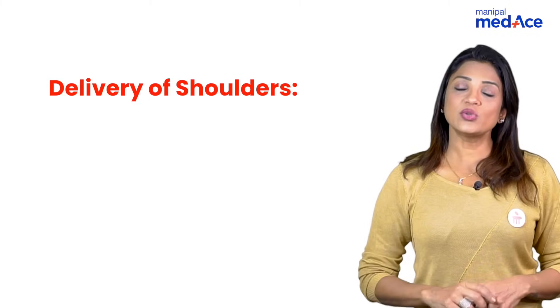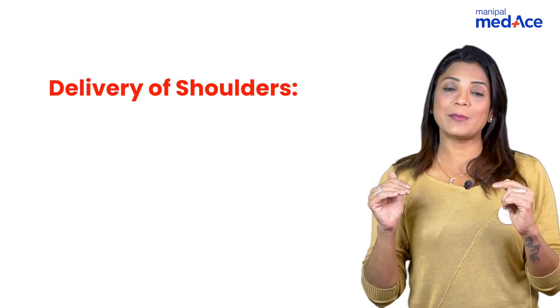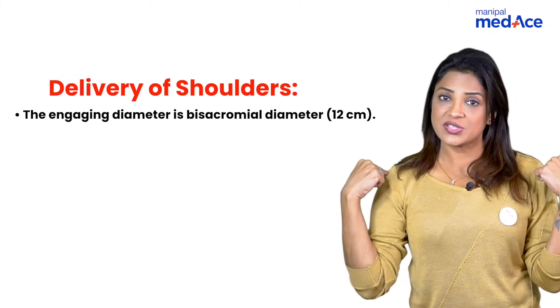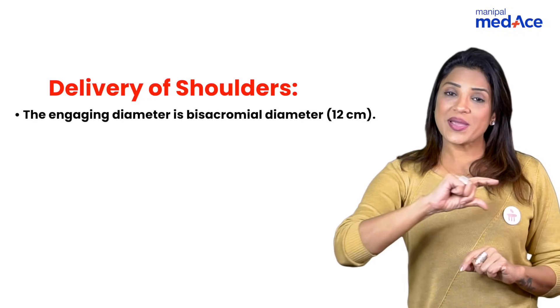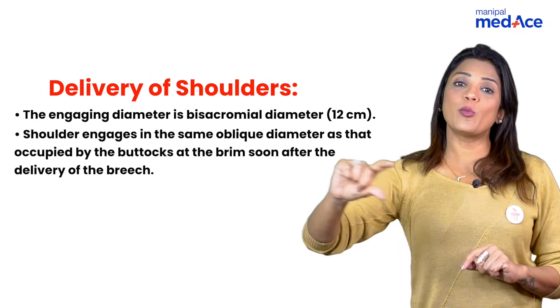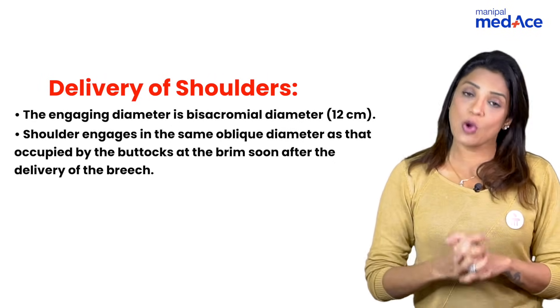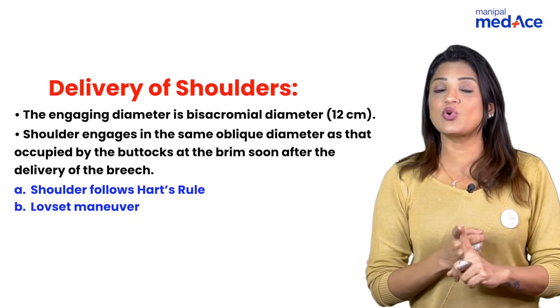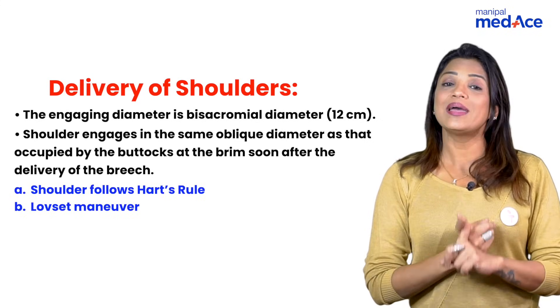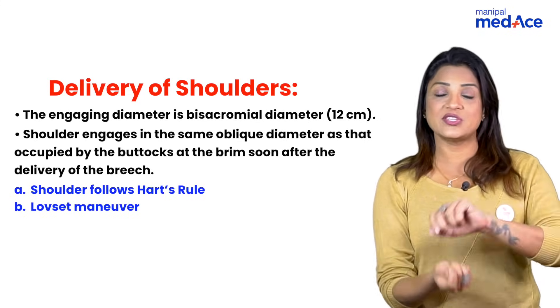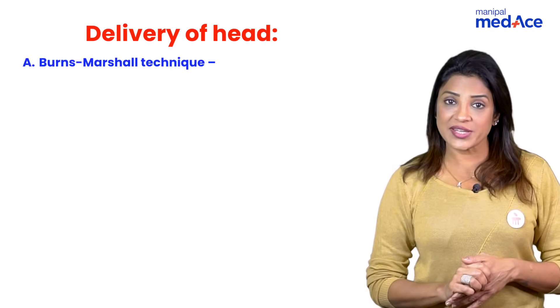For shoulder delivery: the shoulder's bisacromial diameter is 12 cm and it occupies the same oblique diameter as the bitrochanteric hip diameter. This shoulder is going to follow Halban's rule, and the maneuver used is Lovset's maneuver to deliver the baby's shoulders. For the after-coming head of breech, the most common technique is the Burns-Marshall technique, where suprapubic pressure is given along with contraction — known as Kristeller's maneuver — and the baby hangs by its own weight, then is turned upside down onto the mother's abdomen.